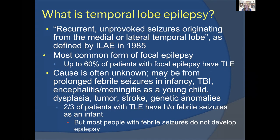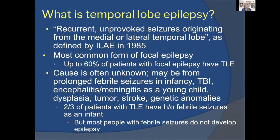The cause of temporal lobe epilepsy is often unknown. We do know that people who have prolonged severe febrile seizures in infancy are much more likely to develop temporal lobe epilepsy. Other risk factors include traumatic brain injury, brain infections like encephalitis or meningitis in young children, anatomical anomalies like dysplasia, tumors, and strokes. Two-thirds of patients with temporal lobe epilepsy have a history of febrile seizures as an infant, but most people who have febrile seizures will not go on to develop epilepsy.